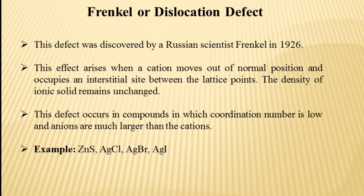Frenkel defect is also known as dislocation defect. This defect was discovered by a Russian scientist Frenkel in 1926. This defect arises when a cation is not present at its normal position — it moves out of its normal position and occupies some other interstitial site between the lattice points. As the cation is dislocating from its normal position, that is why this defect is also known as dislocation defect.